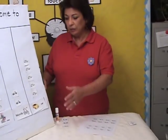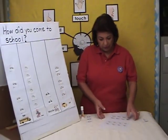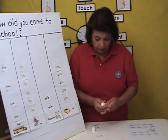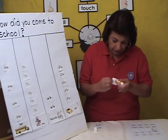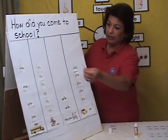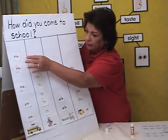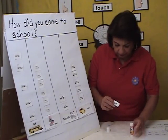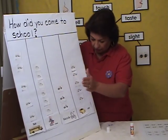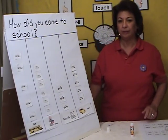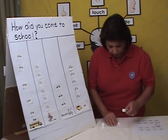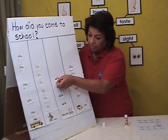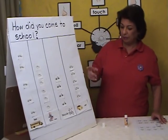Students will come up to the graph and choose the type of transportation that they came to school today. For example, if this student rode on the bus, he will choose the bus and come and place it on the graph. Another student rode his bicycle, so he'll come up and place it on the graph. Another student also rode his bicycle to school and he'll come up and place it on the graph.